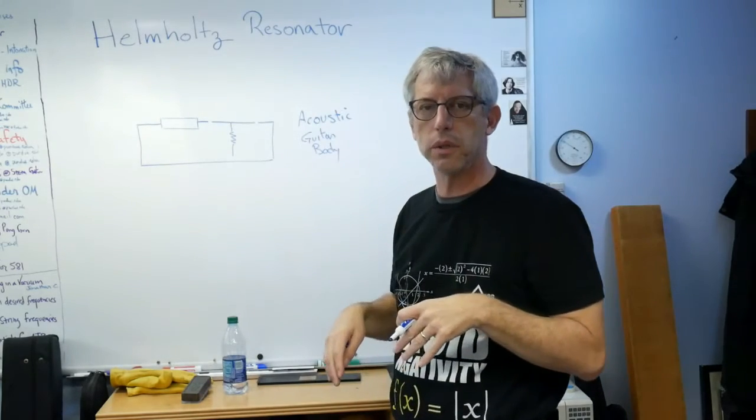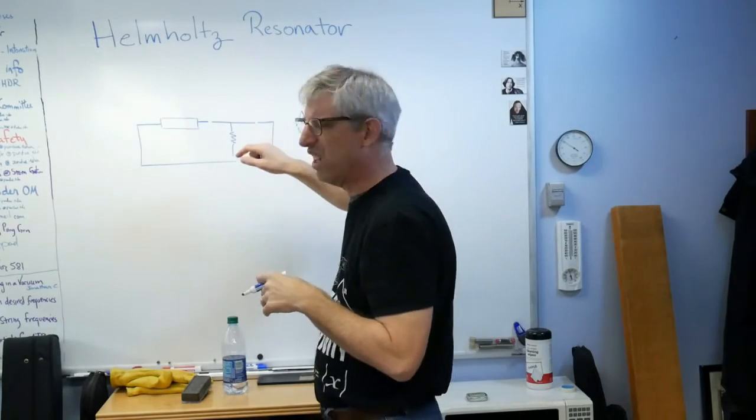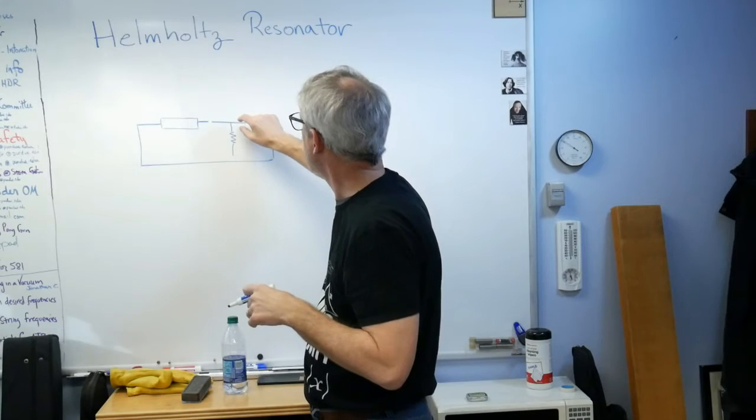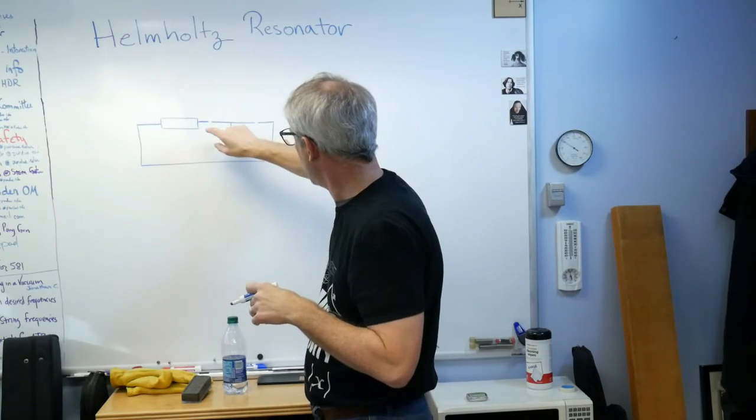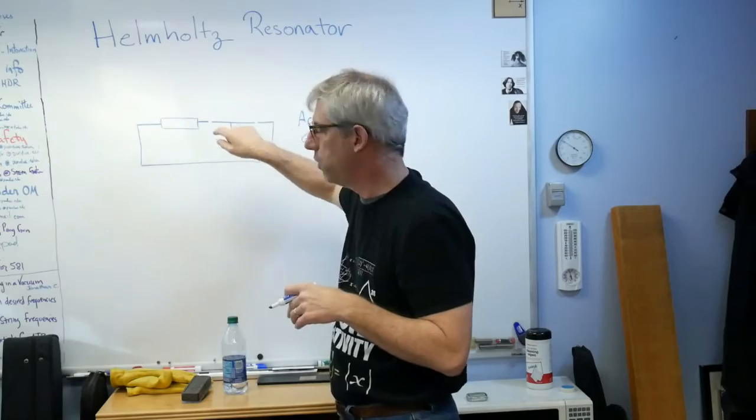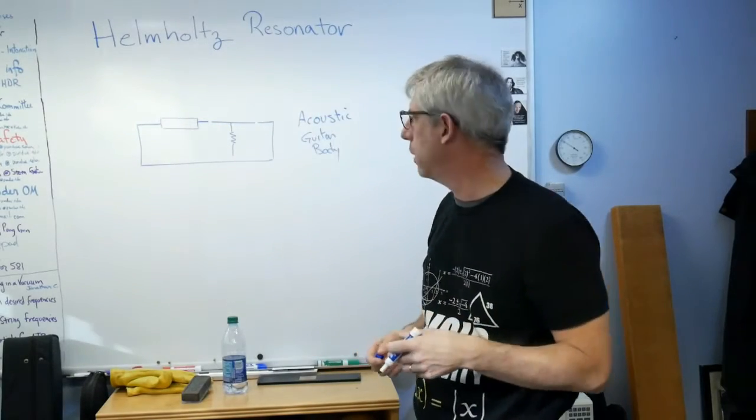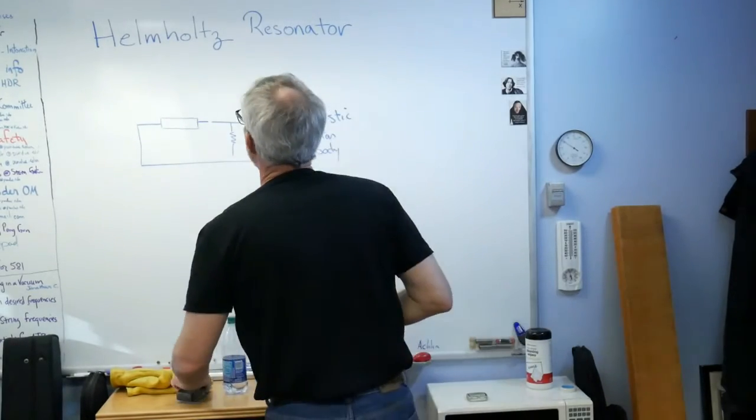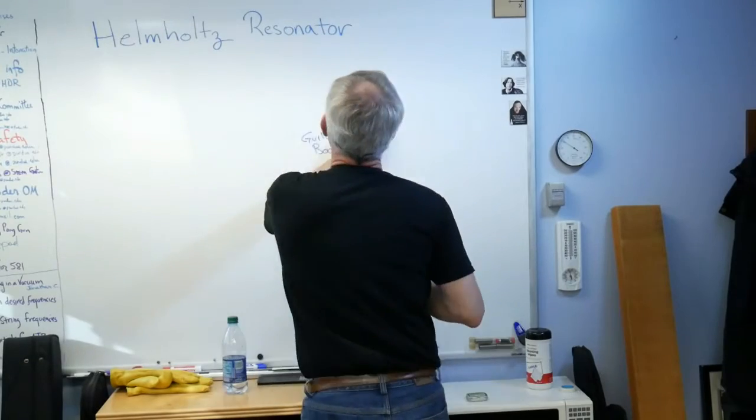The top of the guitar moves back and forth a little bit - not a lot - and it has stiffness and mass. If you added that extra term in there, you'd have a two degree of freedom model of an acoustic guitar that actually works.